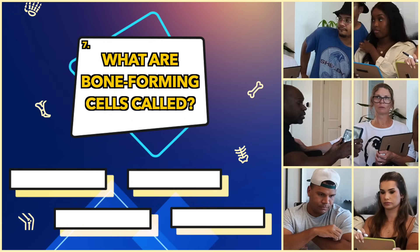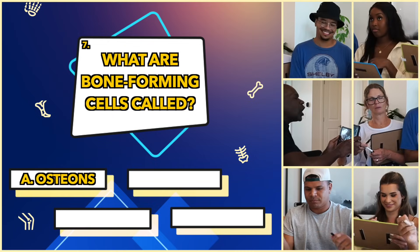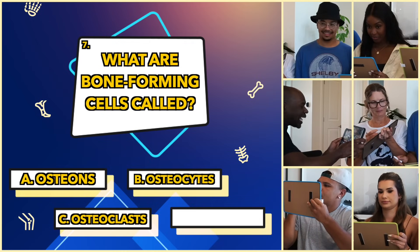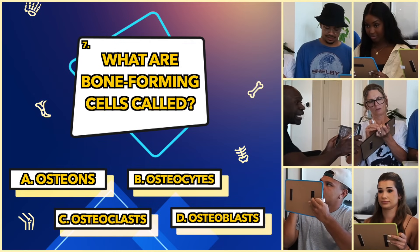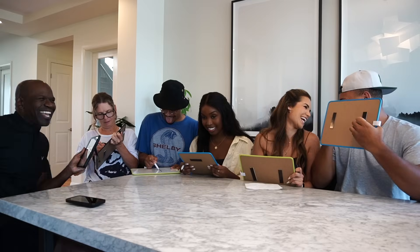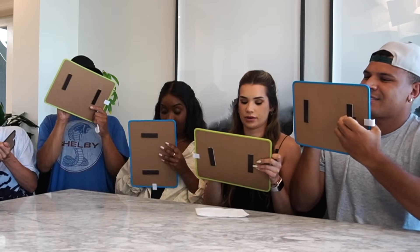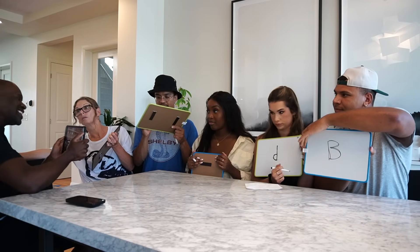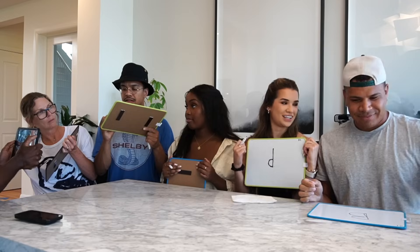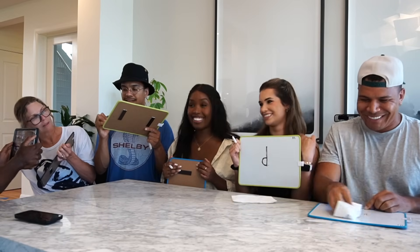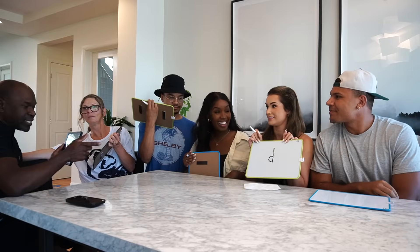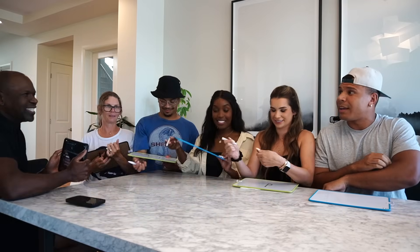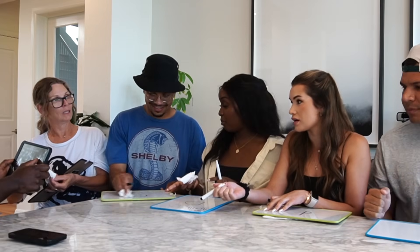What are bone-forming cells called? Multiple choice: A, osteons; B, osteocytes; C, osteoplasts; or D, osteoblasts. That sounds like a milkshake. Last time I thought the one that sounded weird was the answer, so I'm choosing it. Alas, you are incorrect. The correct answer is D, osteoblasts. It's always the one that sounds like a made-up word.